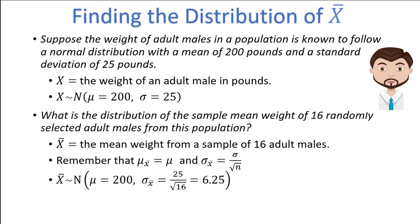I often put a subscript x-bar on the standard deviation of the x-bar distribution, just to make it really clear which standard deviation I'm referring to. It's a bit redundant in this context, as it clearly applies to x-bar, so it isn't strictly necessary, but it isn't a bad idea to include it anyways. I often don't put the subscript x-bar on the mean mu, as it is the same regardless of whether we are referring to the initial distribution or to the sampling distribution.